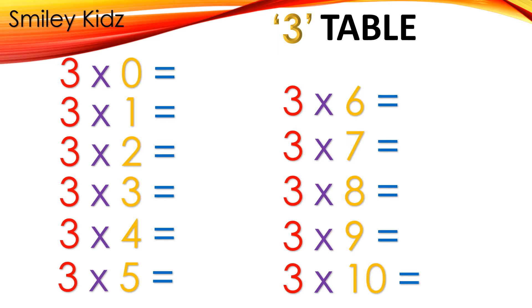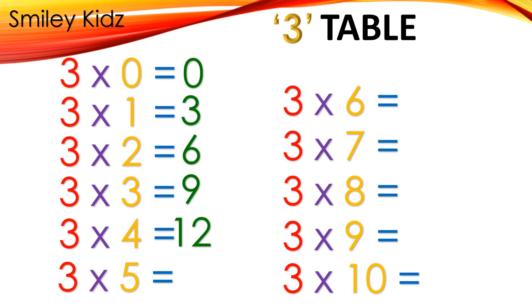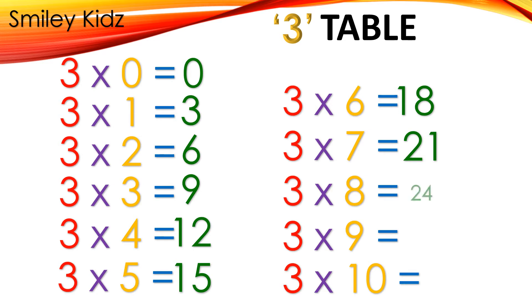Table 3: 3×0=0, 3×1=3, 3×2=6, 3×3=9, 3×4=12, 3×5=15, 3×6=18, 3×7=21, 3×8=24, 3×9=27, 3×10=30.